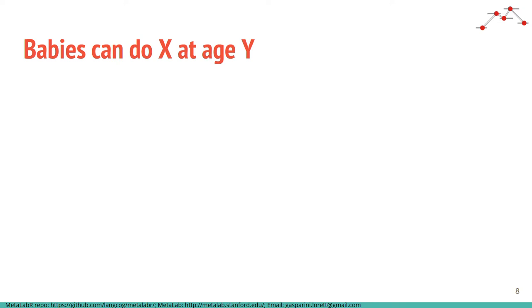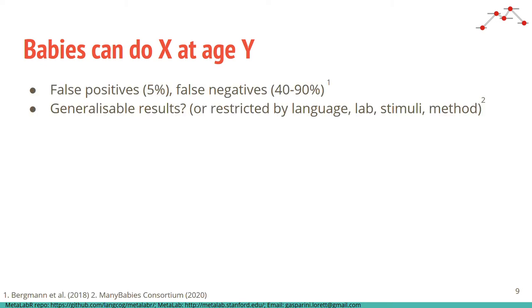So when conducting studies and reading the literature, we're often looking for results that tell us babies do X at age Y. But such statements made on the basis of the results of a single study can be problematic. Significant results could be a false positive or null results could be a false negative, especially in infant research which is notoriously underpowered due to the difficulties of recruiting and testing babies.